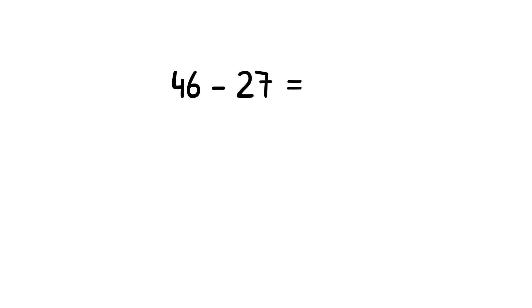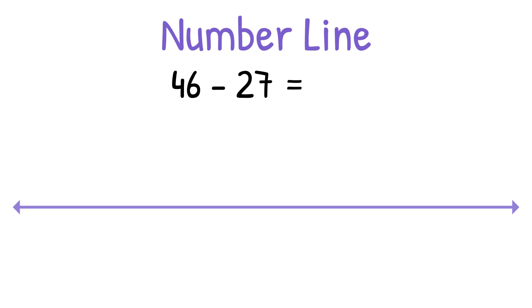Next, we'll solve the same equation using number line. We have to draw our open number line and then start at the end, all the way at the right side, because we're subtracting, so we're going backwards. We're going to start at the number 46. With the number line strategy, you don't have to start subtracting in the 1s. So we're going to start subtracting with the 10s. 46 minus 20 equals 26. And then we have to take away our 1s. 26 minus 7 equals 19. So for the third time, using three different strategies, we get the same answer, 19.